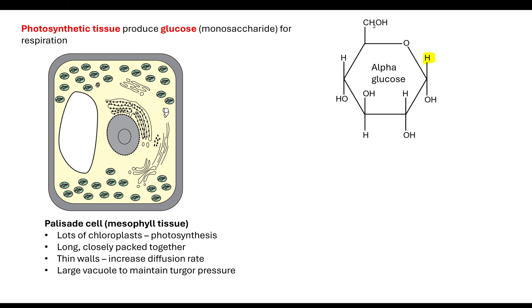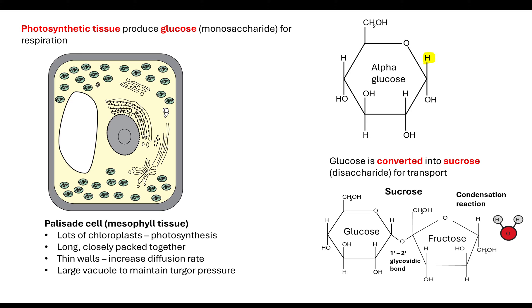When photosynthesis occurs, it makes glucose for respiration. But if we want to transport this molecule somewhere else within the plant, we need to convert it. The plant converts the glucose into sucrose, which is a disaccharide made up of glucose and fructose, joined together by a glycosidic bond through a condensation reaction.